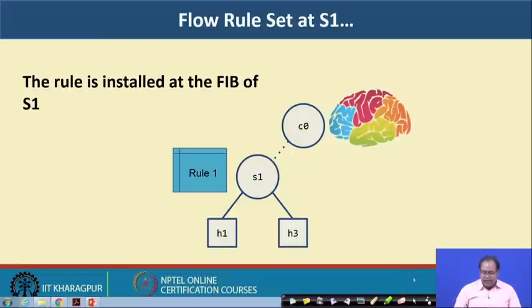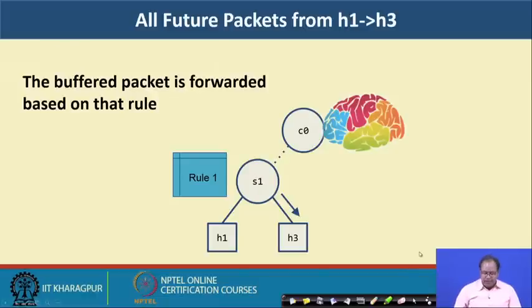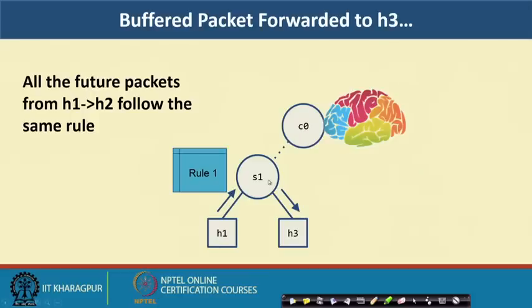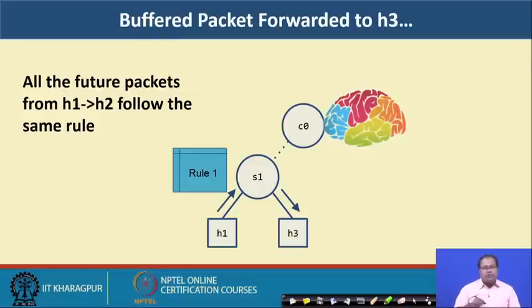Once the switch has this rule, it forwards the packet to H3. Since the rule is already installed in the TCAM hardware, for subsequent packets you do not need to communicate with the controller — communication with the controller is only required one time. For all subsequent packets there will be a TCAM hit, and whenever there is a cache hit you directly forward the packet to H3.